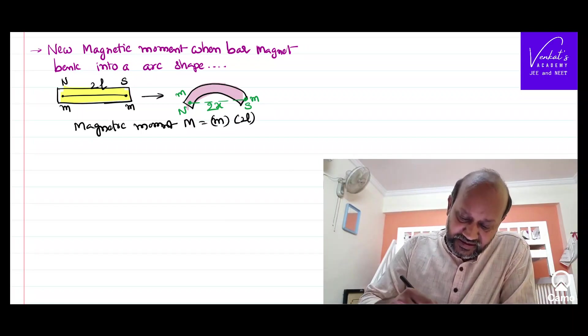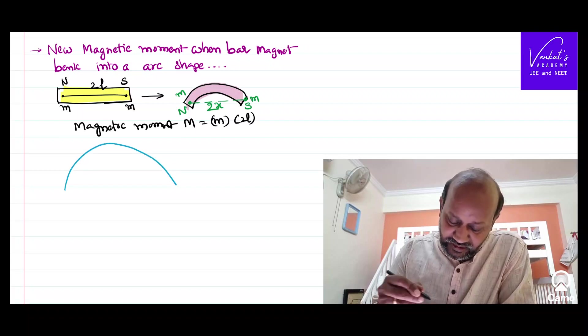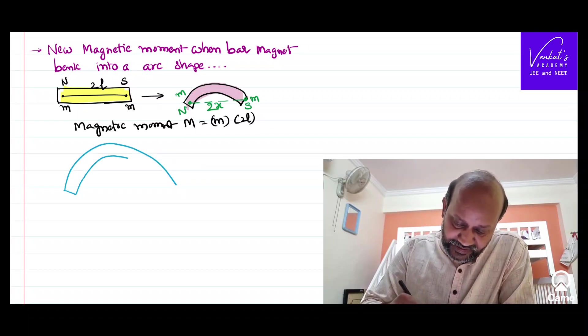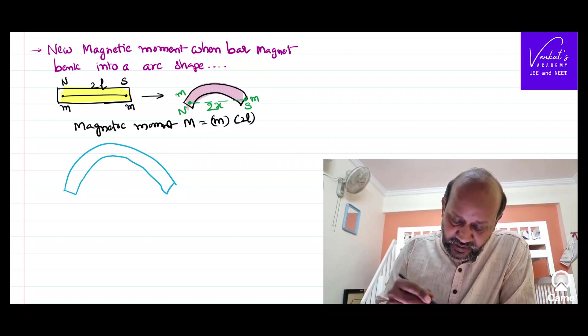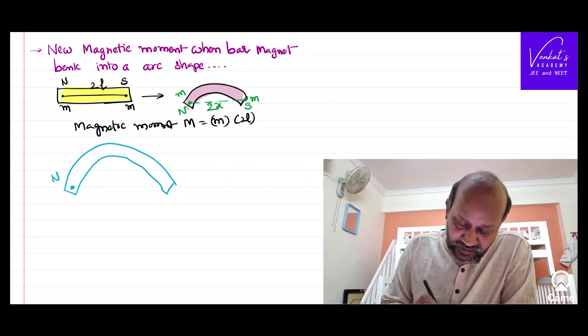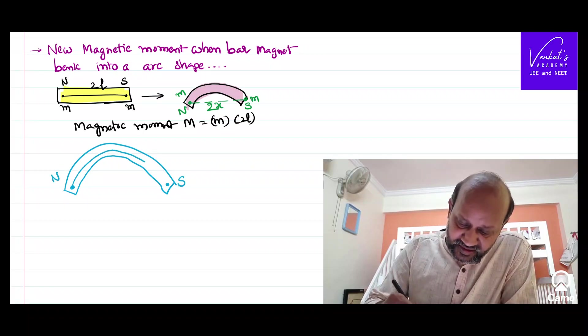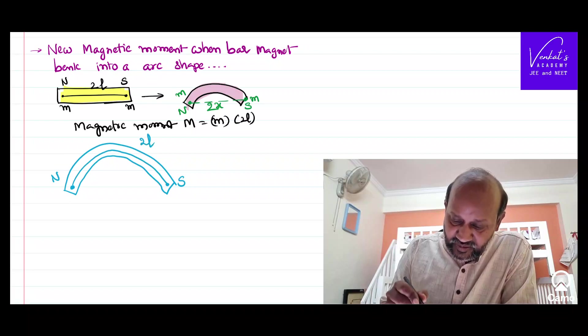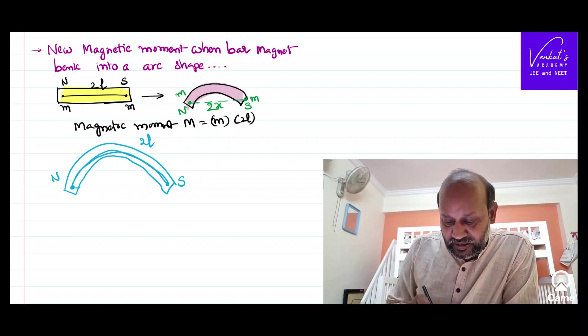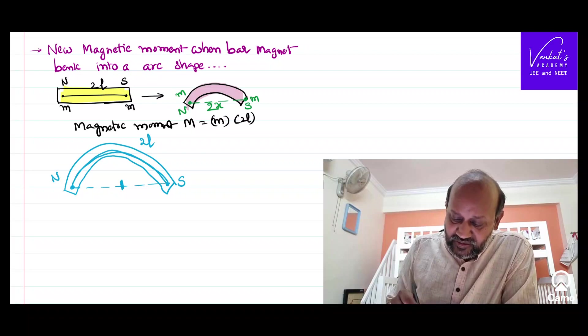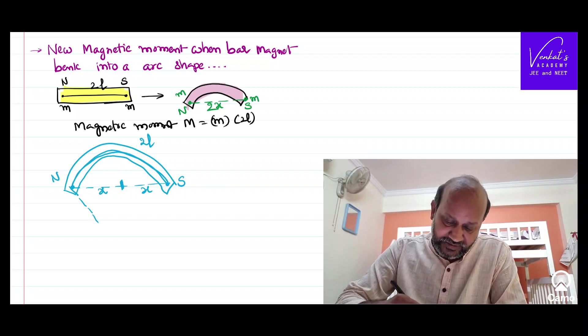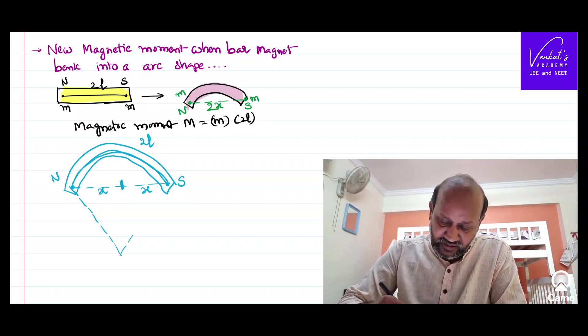Now a bar magnet is taken. It was bent like an arc like this. This is the north pole, this is the south pole. This distance is known for me 2L, that is the original length, the distance between the north pole and south. But the magnet is being bent. That is no more 2L, that is 2x. So let me call this part as x, this part is an x. This bar magnet as it was converted into an arc.